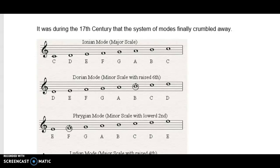In theory, between C and D we have a whole tone; between D and E, a whole tone; E and F is a half tone because E major actually needs an F sharp — so that's the semitone. F to G is a whole tone, G to A a whole tone, A to B a whole tone, and B to C a half tone. So between scale degrees 3–4 and 7–8 in a major scale we have half tones.